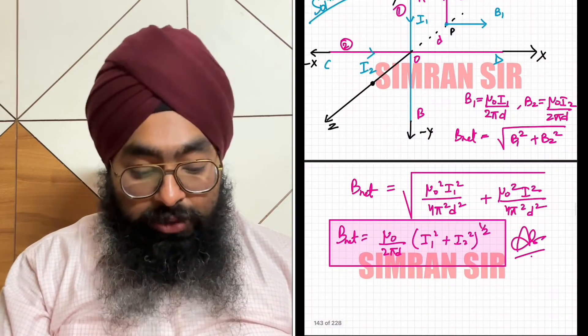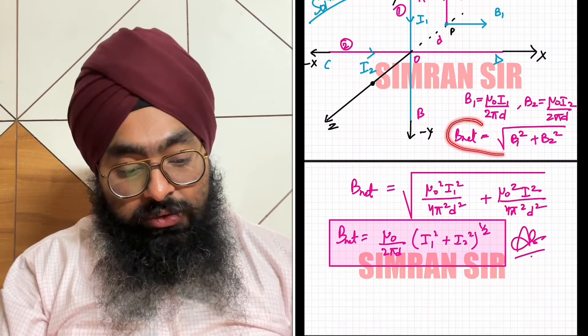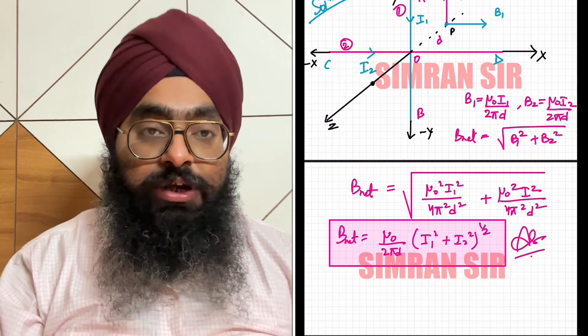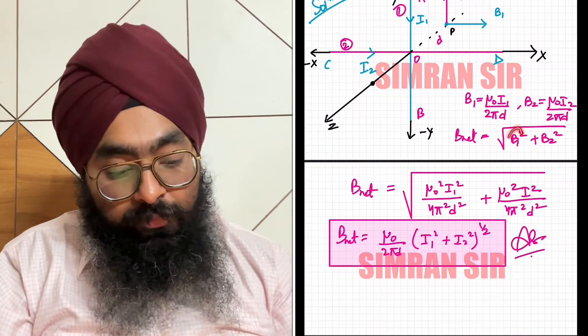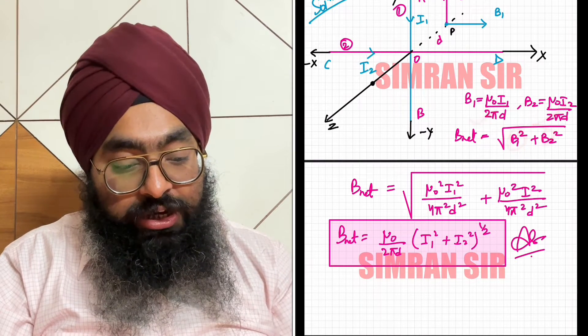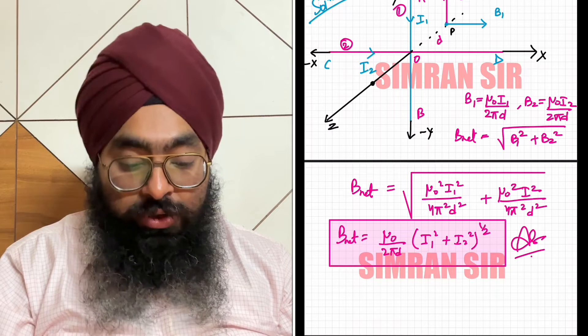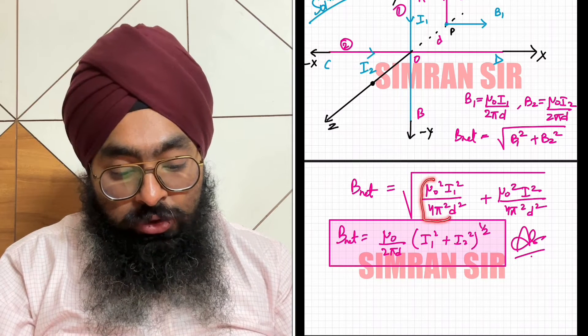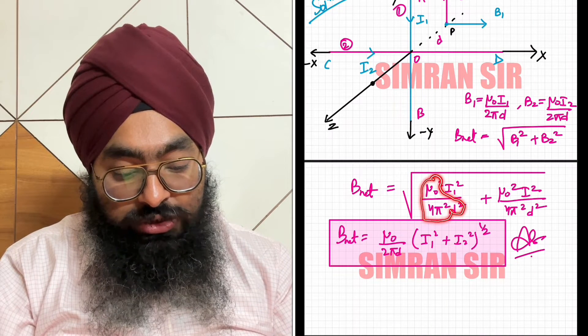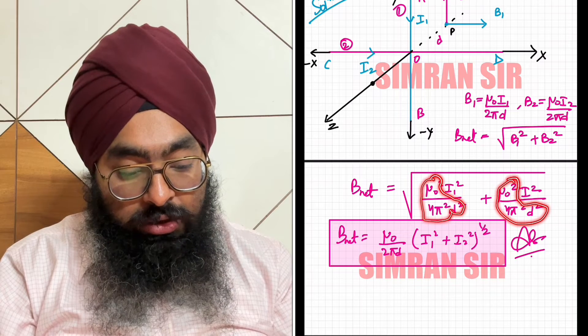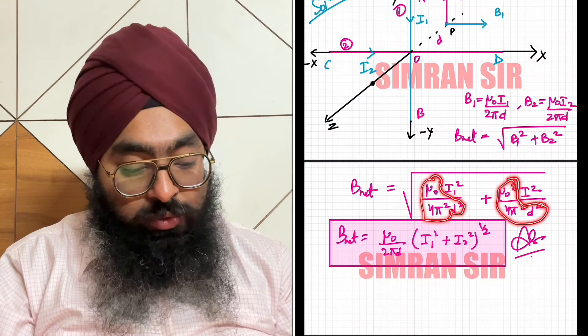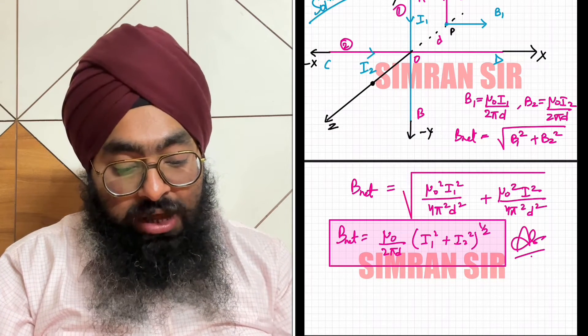To find the resultant, we use vector addition. The resultant is B_net = sqrt(B1^2 + B2^2). We have already found the B1 and B2 values, so we substitute them. Taking common terms, we get mu_0^2/(4*pi^2*d^2) times (i1^2 + i2^2).